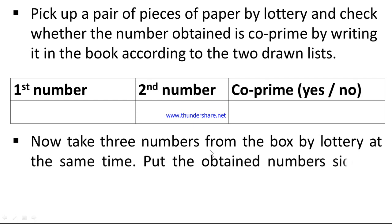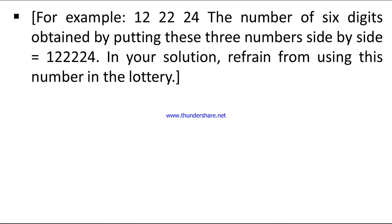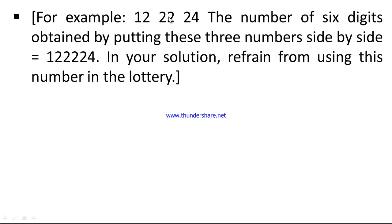Now take three numbers from the box by lottery at the same time. Put the obtained numbers side by side to form a smallest and a largest number of six digits. For example, 12, 22, and 24, the number of six digits obtained by putting these three numbers side by side is 122224. In your solution, refrain from using this number in the lottery.